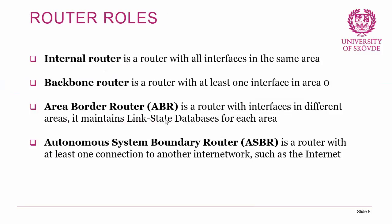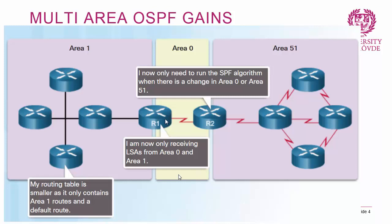For example, if there is a topology change in area 1, Router 1 as the ABR gets that change and updates its link state database to reflect the current view of area 1. It then sends an LSA type 3 to Router 2, containing the routes to the different networks in area 1. Router 2 simply adds those routes to its routing table, and then redistributes that type 3 LSA into area 51, so routers in area 51 also know routes to the networks in area 1.